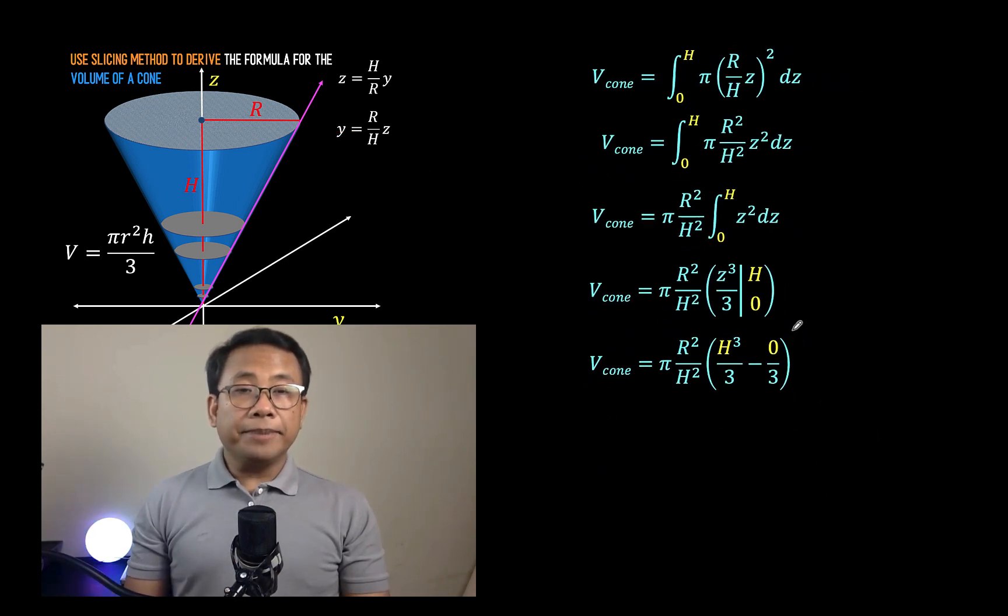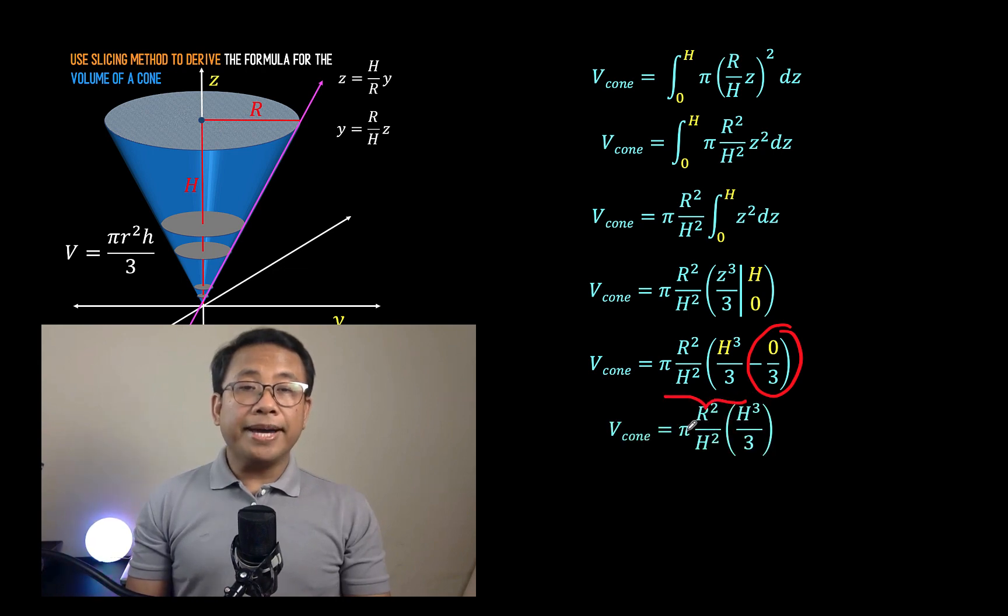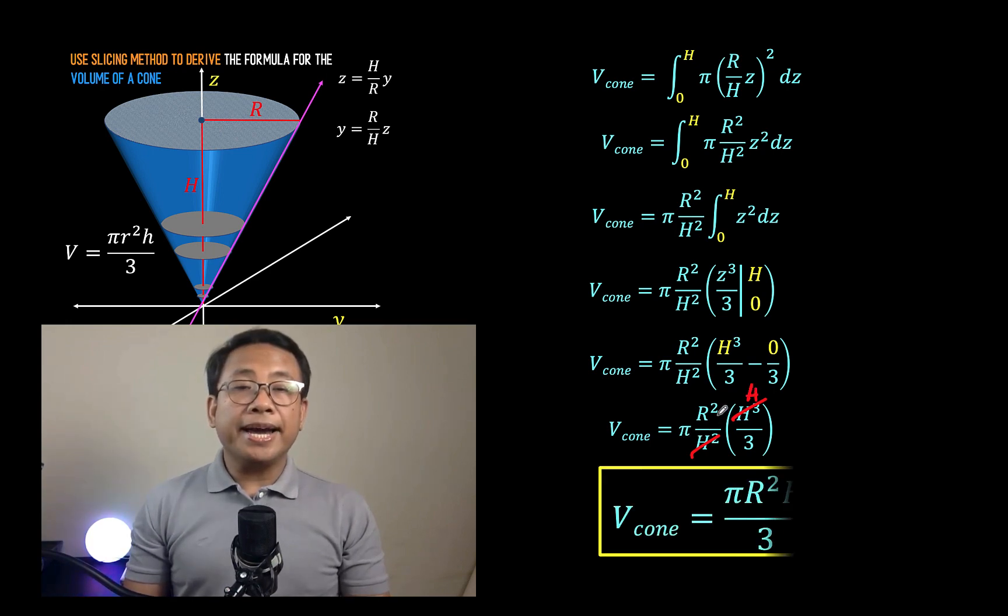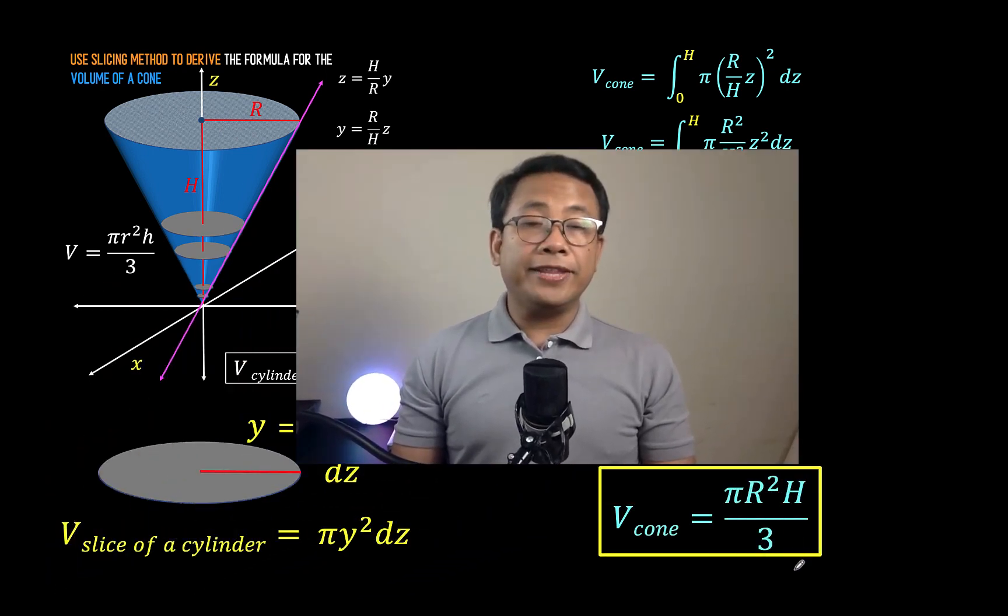Then let's continue. This part here is just 0, so we only have this part: pi r squared over h squared times h cubed over 3. Now h cubed divided by h squared is equal to h, so this is h. So what's left is pi r squared h over 3.